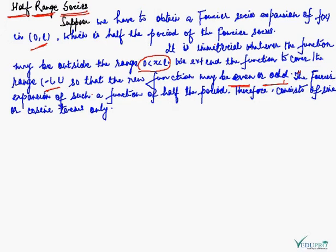If we do so, the Fourier expansion of such a function of half the period will consist of sine or cosine terms. Why is it so? Because we have gone through the topic of Fourier series expansion of even or odd functions.